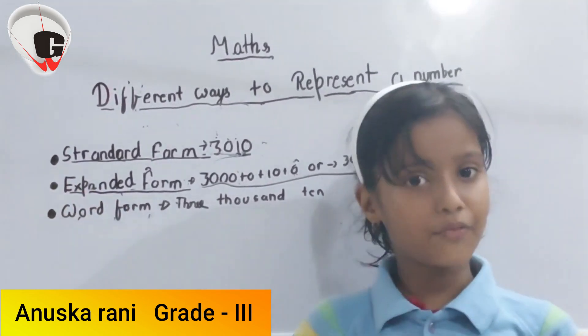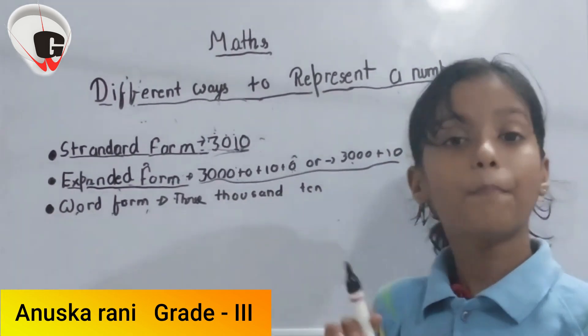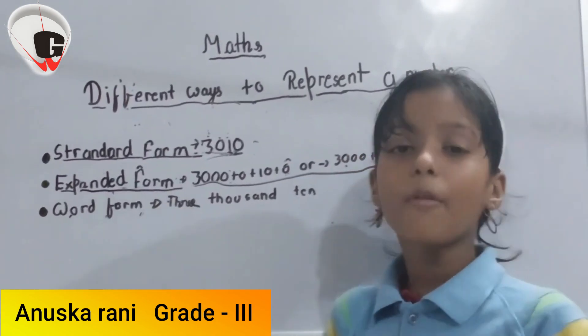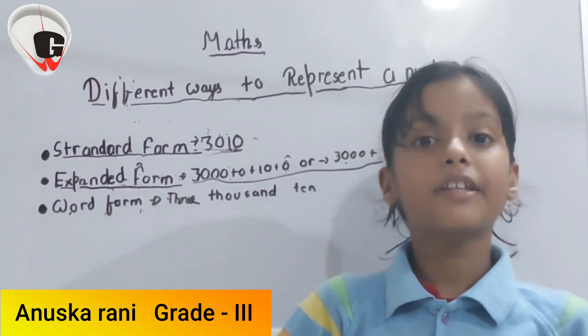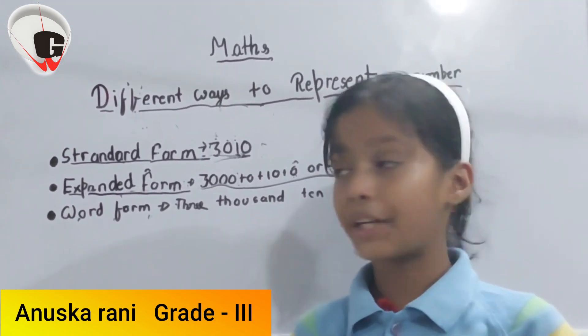In expanded form, we write with the place value. In word form, we write with the number in words.